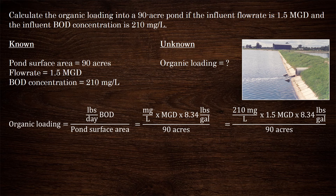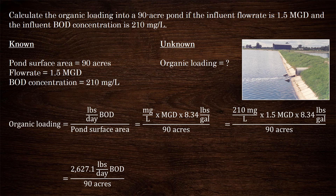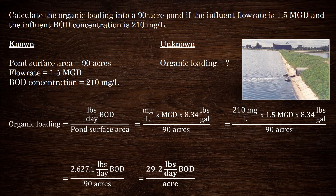Using our calculator, let's get the pounds per day of BOD on the top of this formula: 2,627.1 pounds per day of BOD. On the bottom, we still have 90 acres. Let's finish off this calculation — one last step. Using our calculator, we get 29.2 pounds per day of BOD per acre. This is the organic loading going into this 90-acre pond.